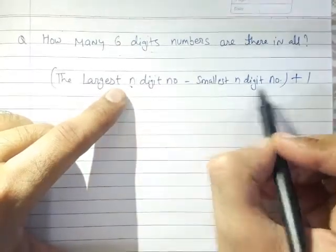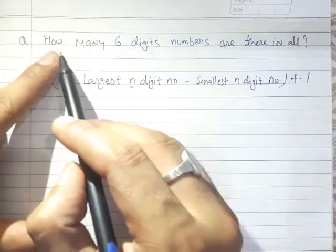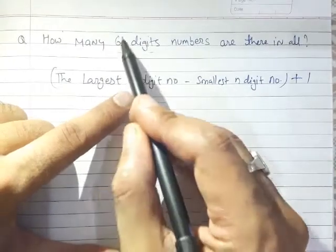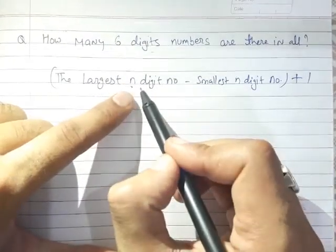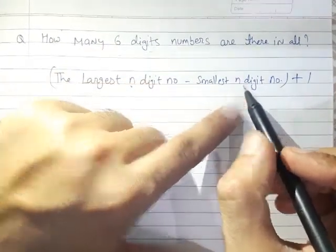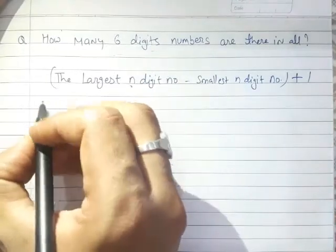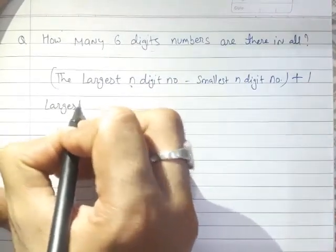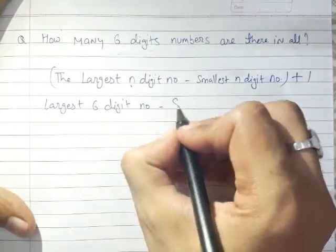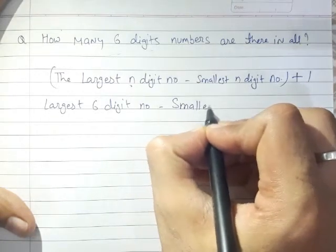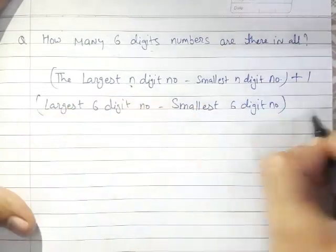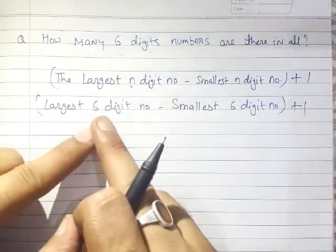What do we mean by largest n-digit number and smallest n-digit number? In this question you are asked how many six digit numbers are there in all, so you put n equals six in the formula. The formula becomes: largest six digit number, minus smallest six digit number, plus one.